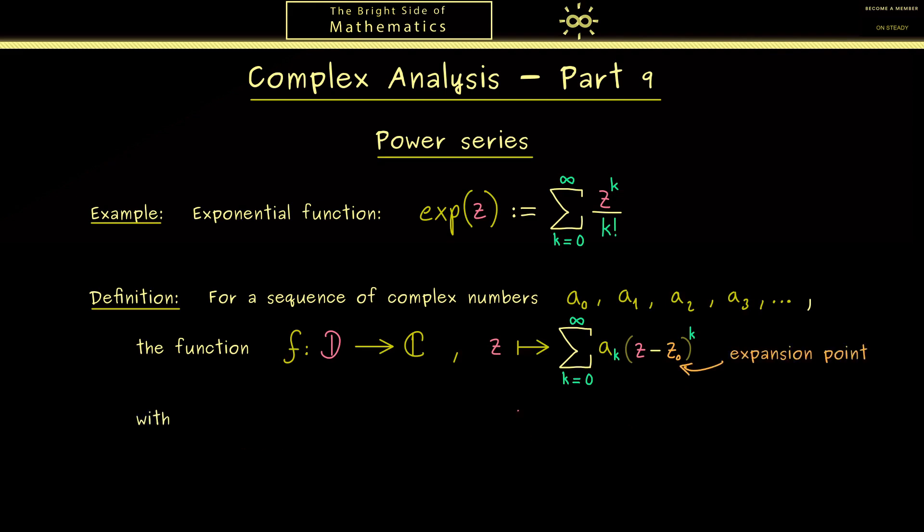Of course what is still missing here is the explicit definition of the domain D. However you might already know this because here in the definition of the map there is a limit involved. And maybe this limit does not exist for all complex numbers z we can choose.